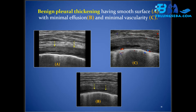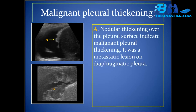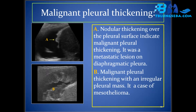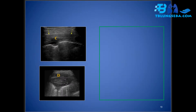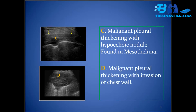Benign pleural thickening presents with a smooth surface, minimal effusion, and minimal vascularity. Malignant pleural thickening features nodular thickening over the pleural surface, as seen in metastatic lesions on the diaphragmatic pleura. Other malignant features include an irregular pleural mass in mesothelioma, hypoechoic nodules in mesothelioma, and pleural thickening with invasion of the chest wall.